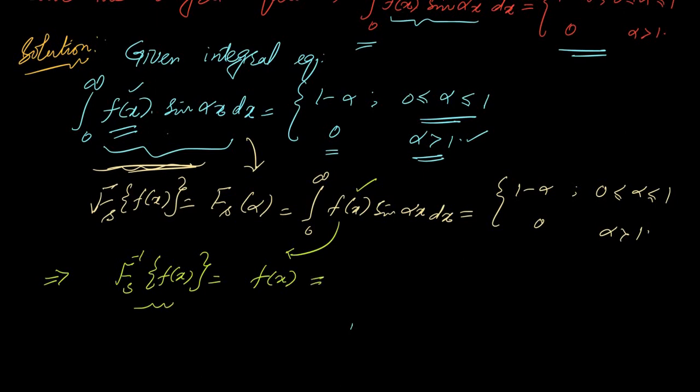That would be equal to - the formula we studied is 2 over pi, 0 to infinity, and f_s, the Fourier transform of, Fourier sine transform of f(x), into sin of alpha x.